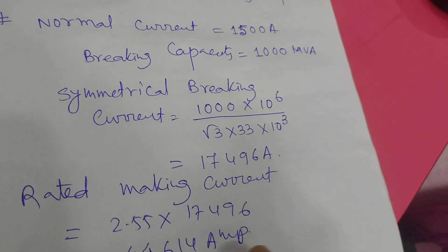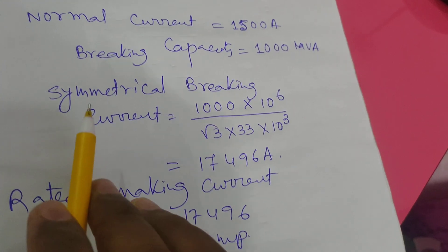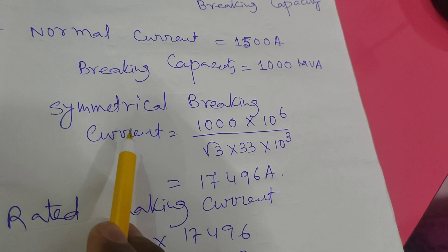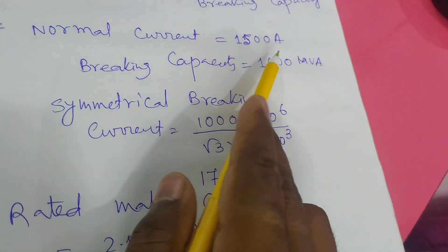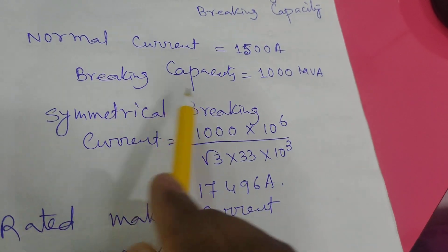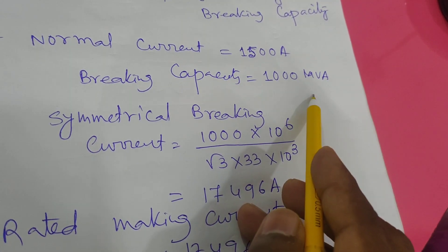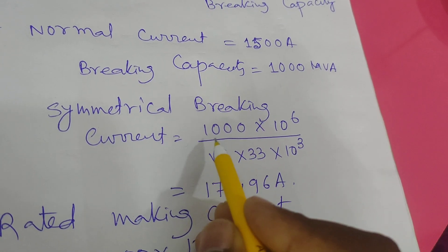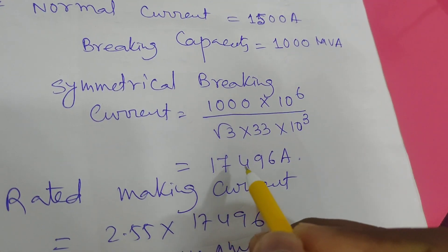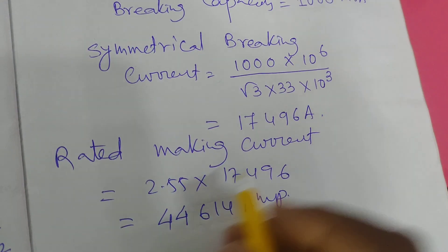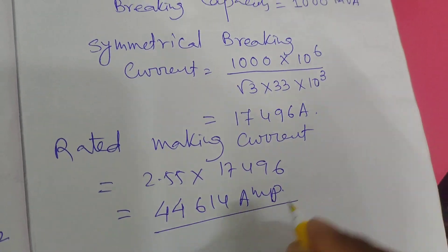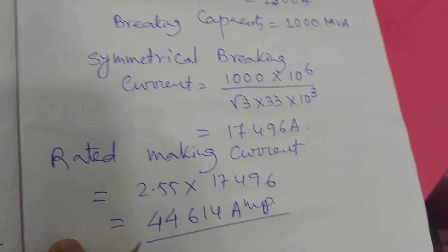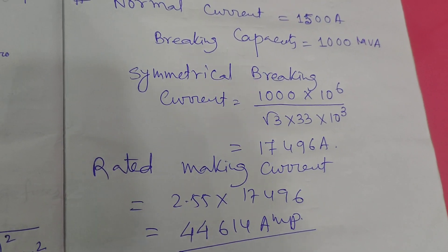This is the breaking current. The normal current is 1500 ampere and the breaking capacity is 1000 MVA, so the breaking current is 17,496 ampere, and the rated making current is 44,614 ampere. By using this formula we can calculate both the symmetrical breaking current and making current. Thank you very much.